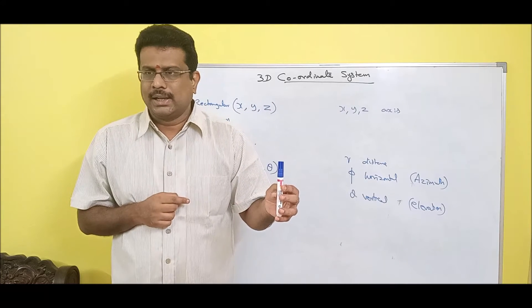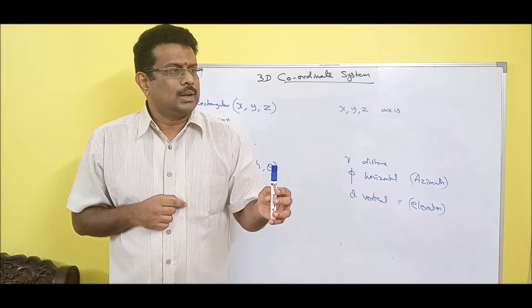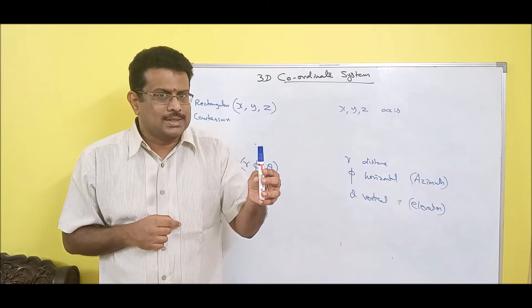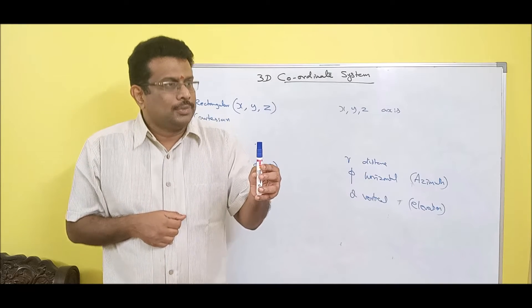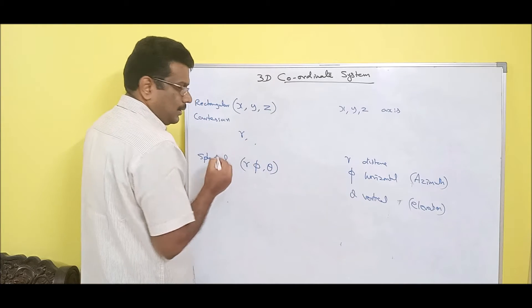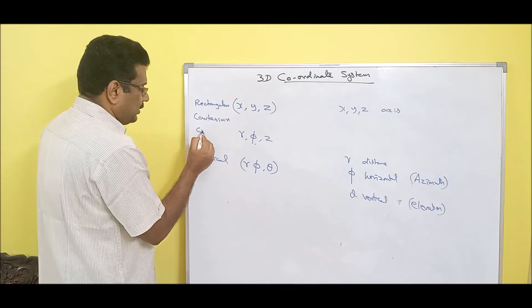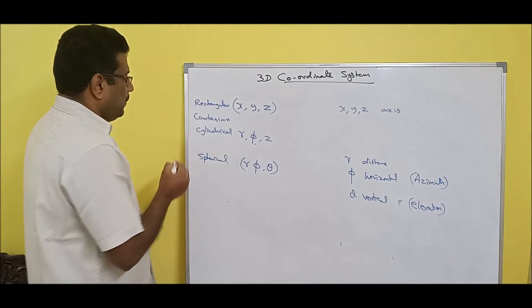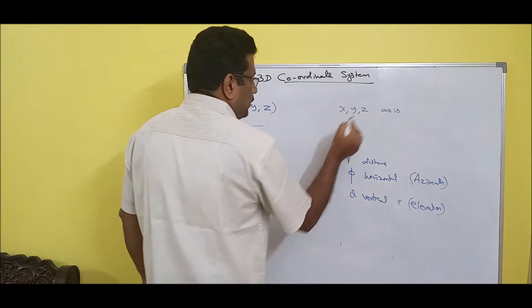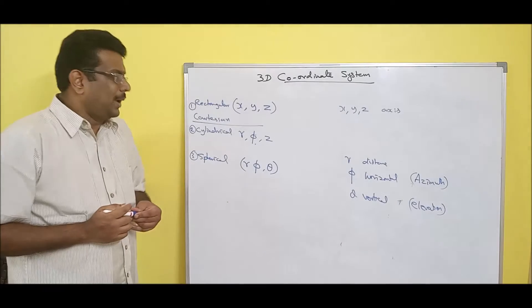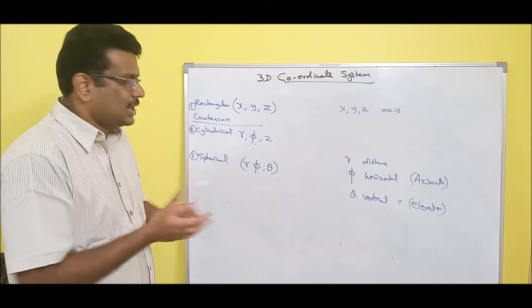One more technique: instead of a vertical angle, I can reduce my height — which is the z-axis. So the three quantities are r (distance), phi (horizontal angle), and z (height). We call this cylindrical coordinates. So please remember: number one is Cartesian or rectangular coordinates, number two is cylindrical coordinates, and number three is spherical coordinates. Your z also comes into other axes.